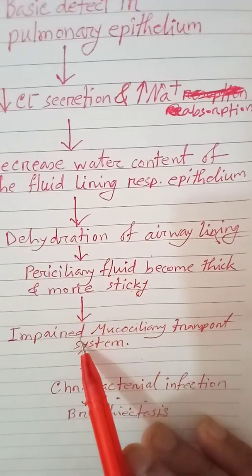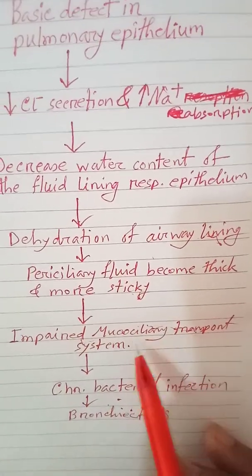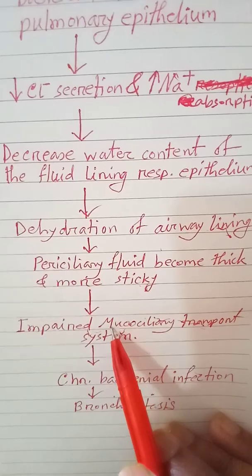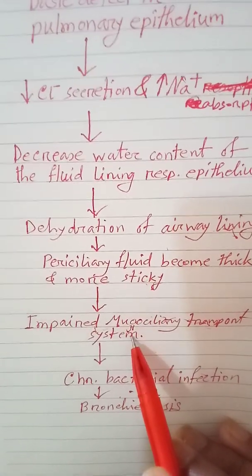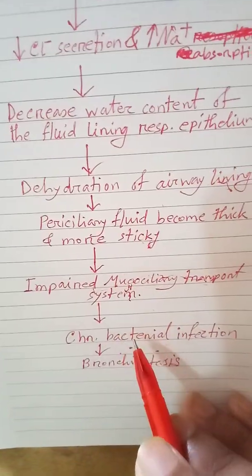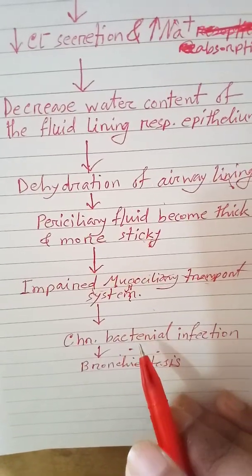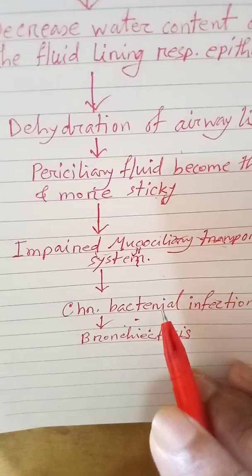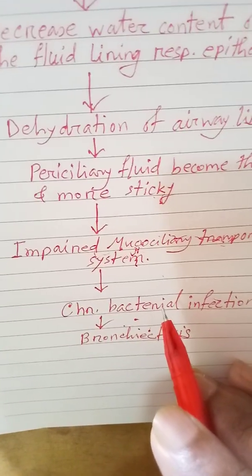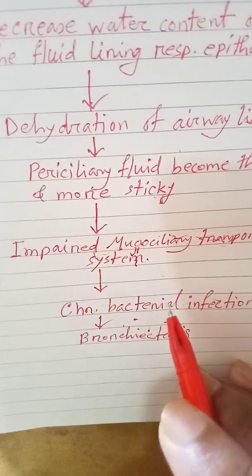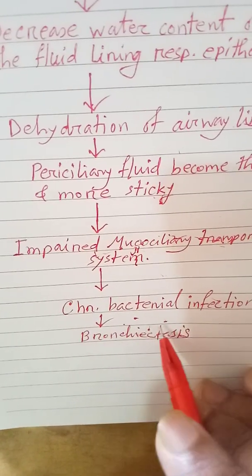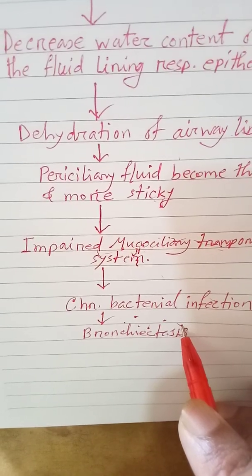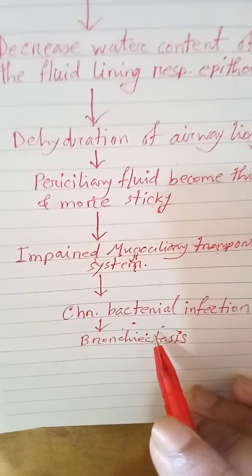When the mucociliary clearance transport system is impaired, there is repeated and chronic infection, followed by inflammation, fibrosis, and bronchiectasis. That is the very basic pathology of cystic fibrosis.